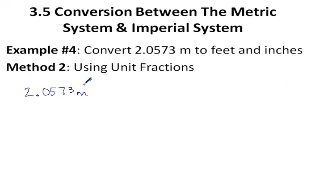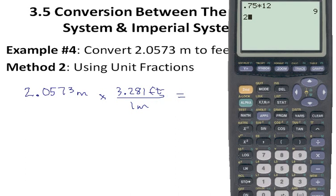We want to go from meters to an imperial unit. What our table offers us in the second entry is 1 meter is 3.281 feet. 3.281 feet in every 1 meter. How does that come out? 2.0573 times 3.281. 6.75.